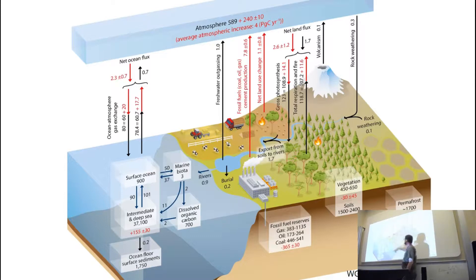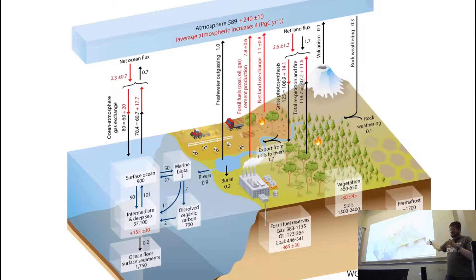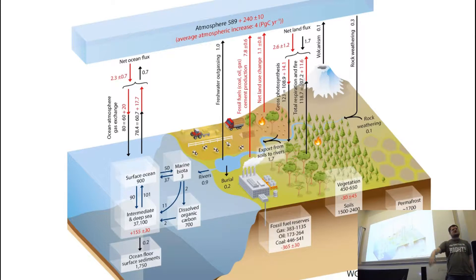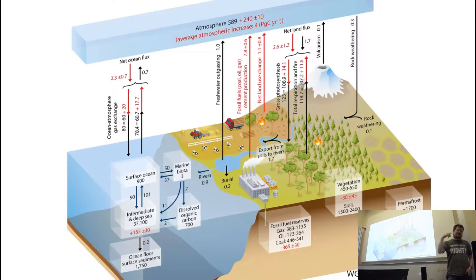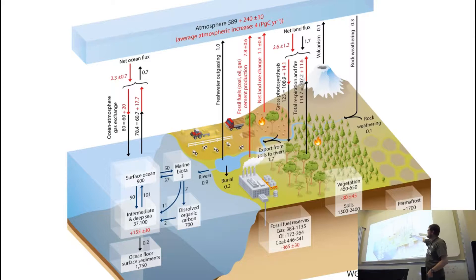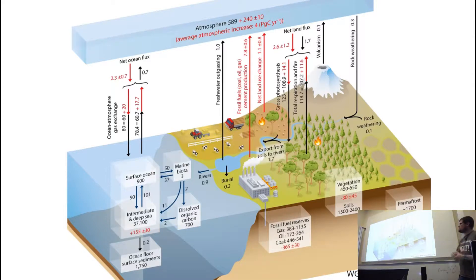Understanding the transport of carbon through the terrestrial system through rivers — it's not just that once stuff gets in the river it gets washed out to sea. There are a lot of processes that go on in between. The red arrows on here are fluxes that have been changed by us, and the black ones are what's thought to be natural, although it's quite hard to distinguish between the two.